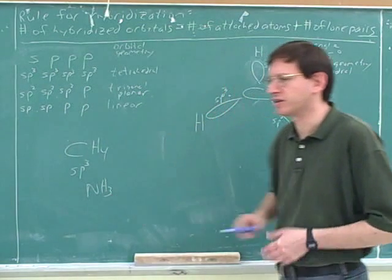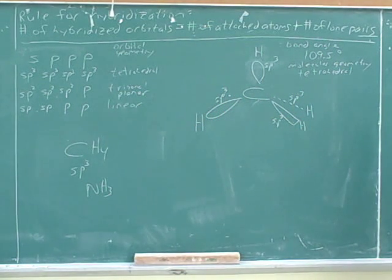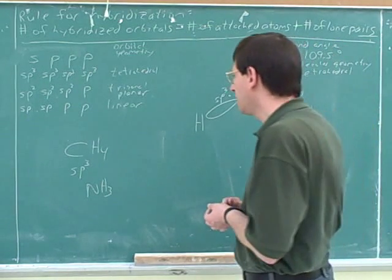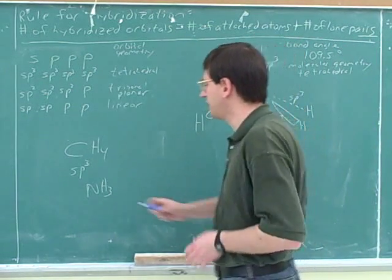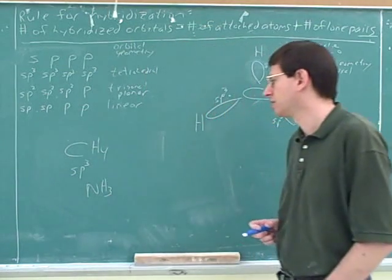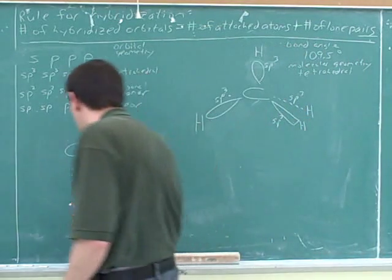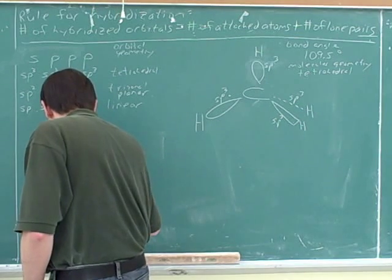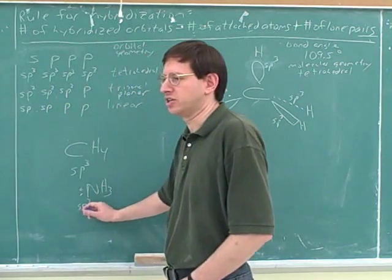Do you know what the name of this molecule is? That's ammonia. That's a pretty common molecule. Now, what's going to be the hybridization of ammonia? SP3. Because it's got a lone pair. So using our rule for hybridization, it'll be SP3.